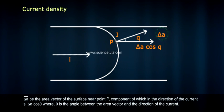ΔA⃗ be the area vector of the surface near point P, component of which in the direction of the current is ΔA cos θ, where θ is the angle between the area vector and the direction of the current.